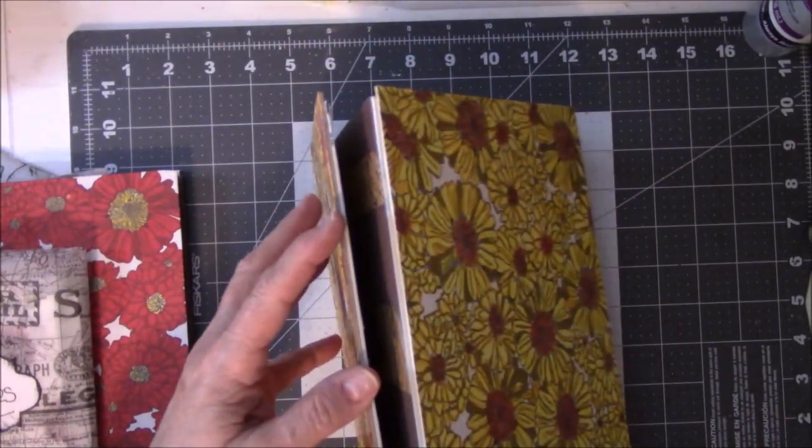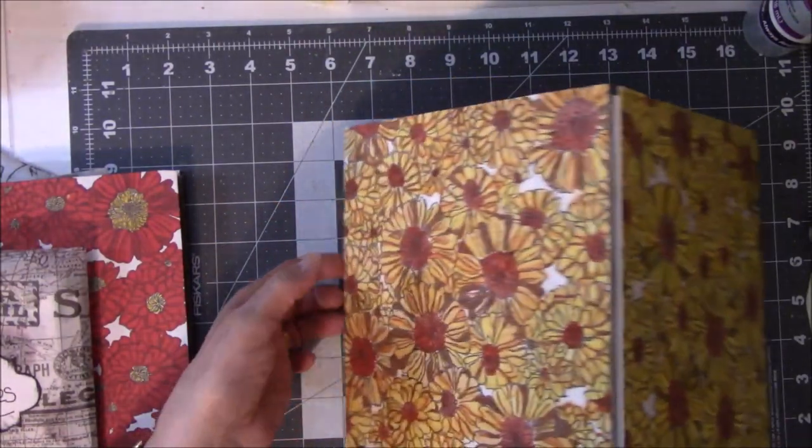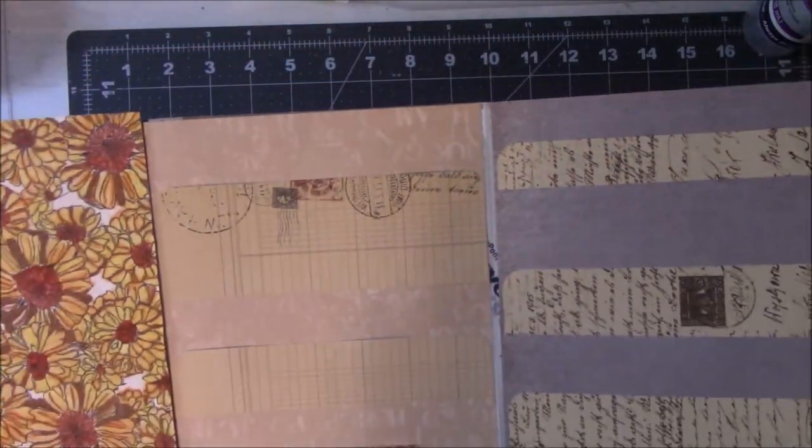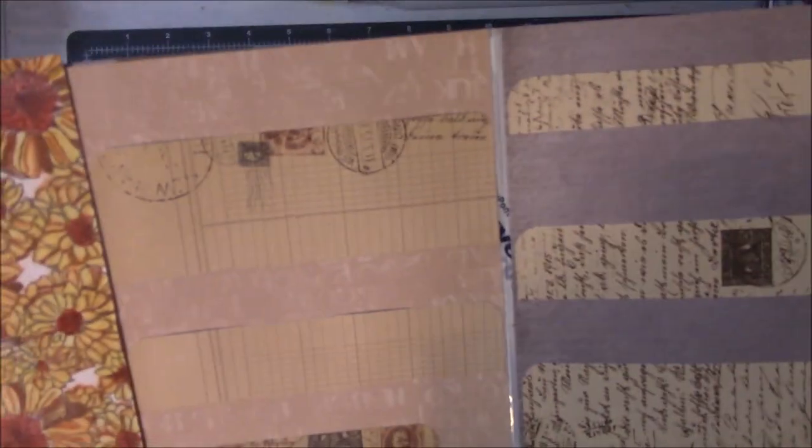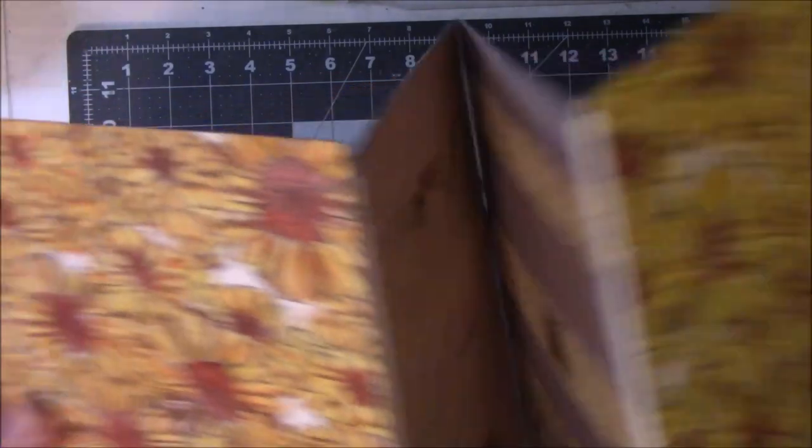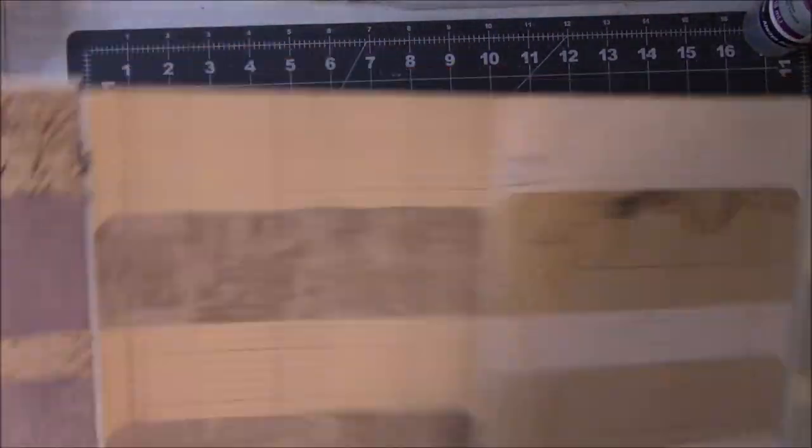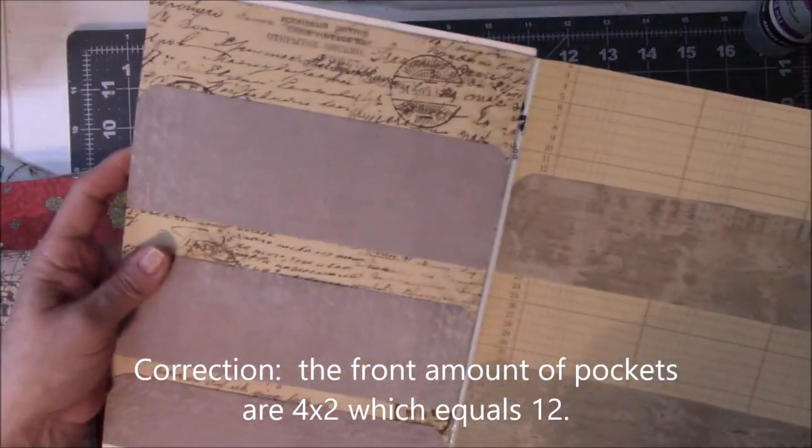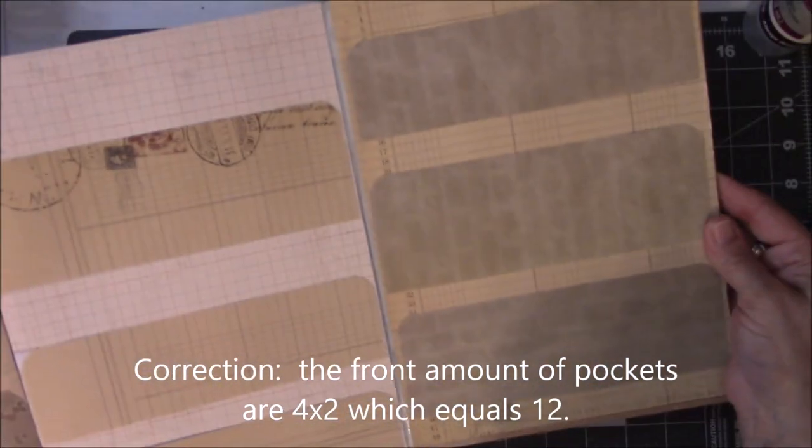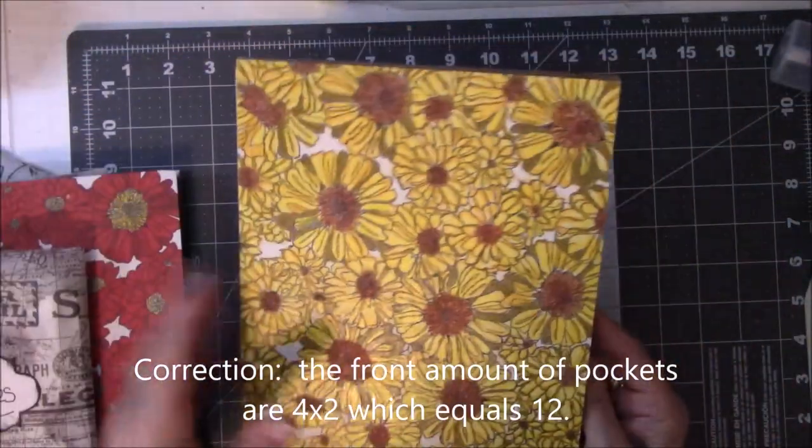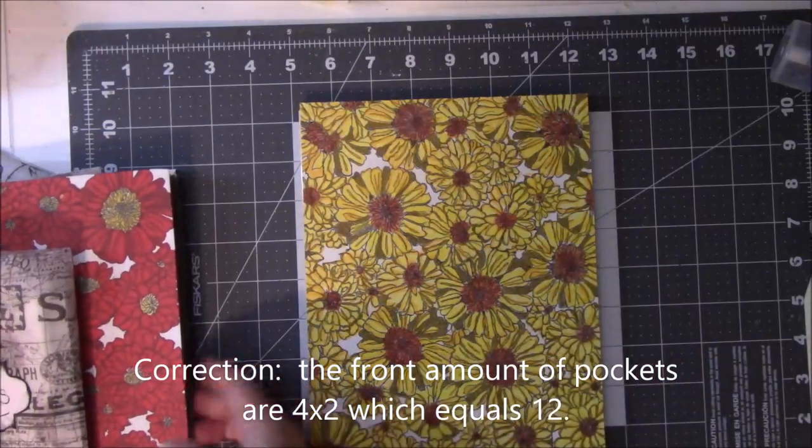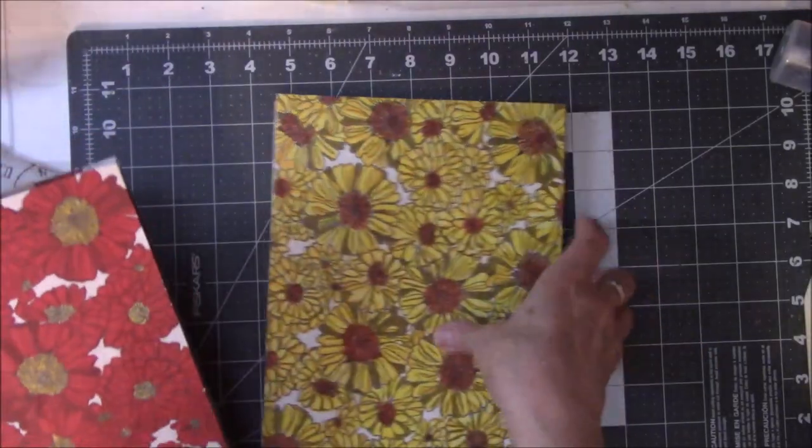These are all from the same scrapbook paper pad. And then flip it over and there it is. So this one has less accordion folds because I cut two of them off. I thought it was too long, so you have this on the back side. You're only actually getting six pockets on the back side, but on the front side you're getting four.